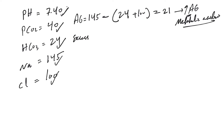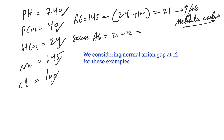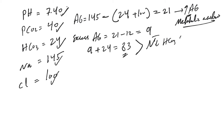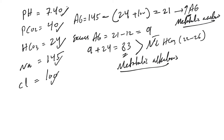We then measure the excess anion gap: 21 minus 12 equals 9. We sum the excess anion gap to the measured bicarb: 9 plus 24 equals 33. Comparing this to normal bicarb of 22 to 26, 33 is definitely more than expected. That means there is metabolic alkalosis. So we now have increased anion gap metabolic acidosis along with metabolic alkalosis.